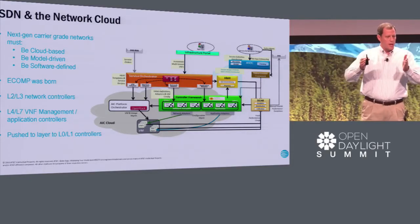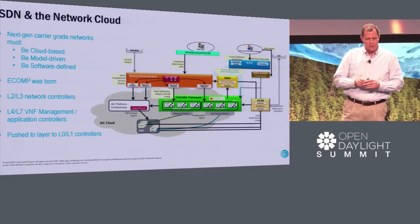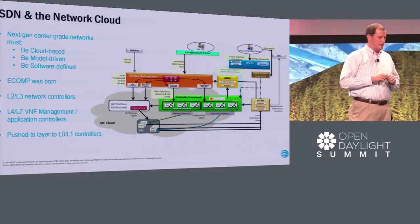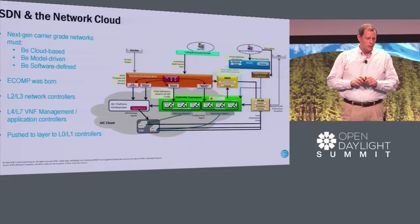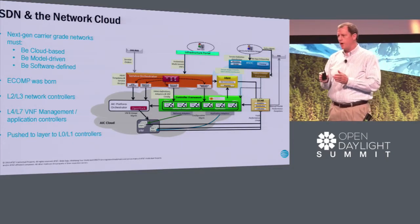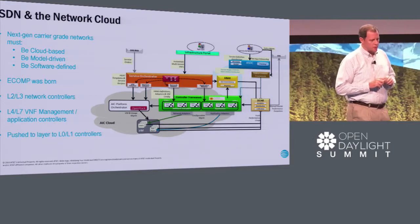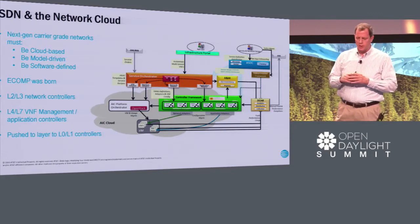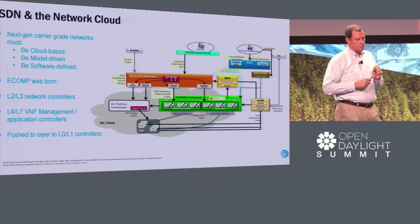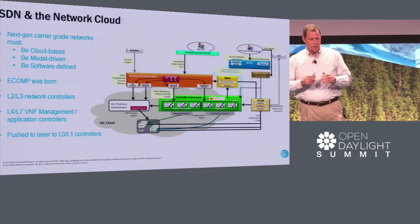I want everyone to transport back about three to three and a half years, because what I'm about to say won't sound so insightful today, but three and a half years ago it was fairly insightful. We had all that knowledge from the controller space, this thing happening in data centers called virtualization and cloud, Intel working on improving packet performance of standard server CPUs — which improved about a factor of 100 over 10 years — and people in academia and research institutions building software to enable network functions. We came to the conclusion that next-generation carrier-grade networks must be cloud-based, must be model-driven, and must be software-defined.